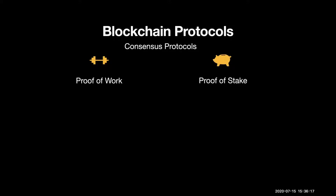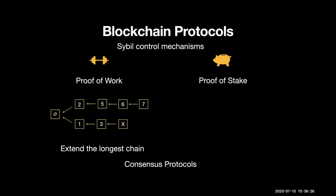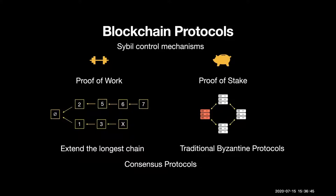These are basically Sybil control mechanisms, and the actual consensus protocols are: one of them is extending the longest chain, the most prominent of which is the Nakamoto consensus used in Bitcoin. With proof-of-stake, if you look under the hood, most protocols built to support it are traditional Byzantine protocols. You can combine proof-of-work or proof-of-stake with consensus protocols to get a new category of blockchain protocol.